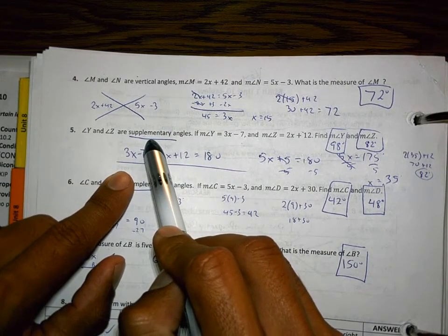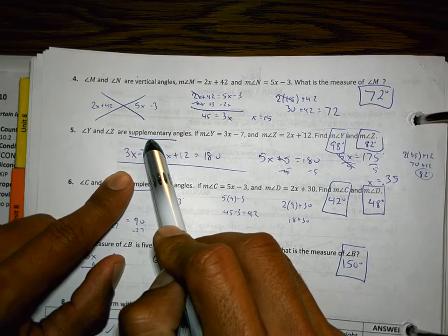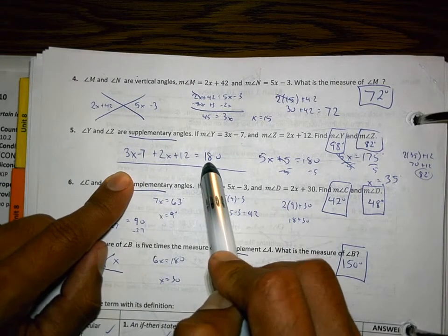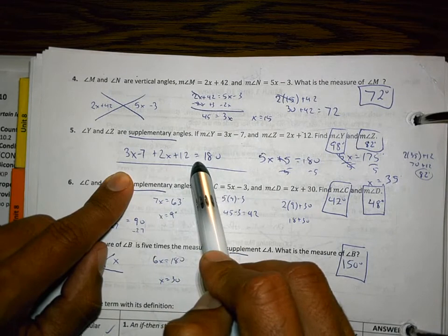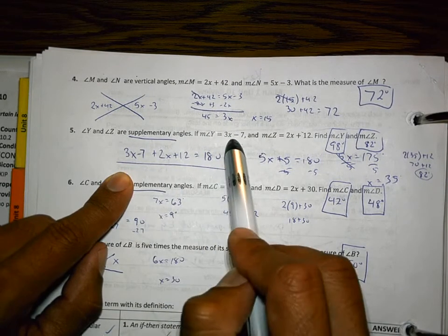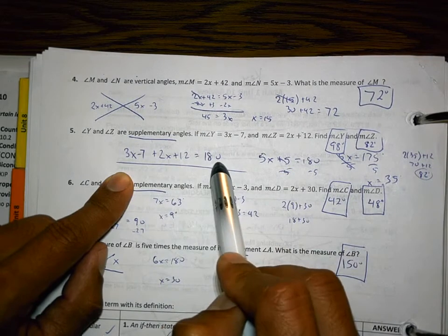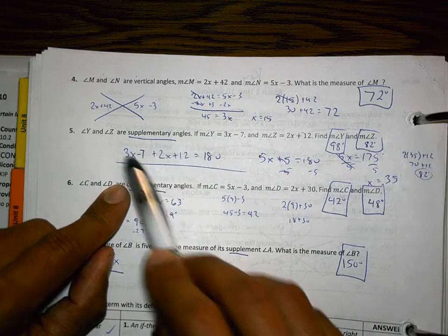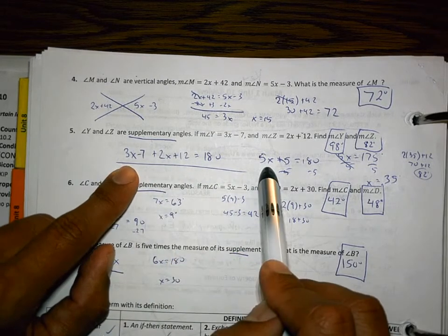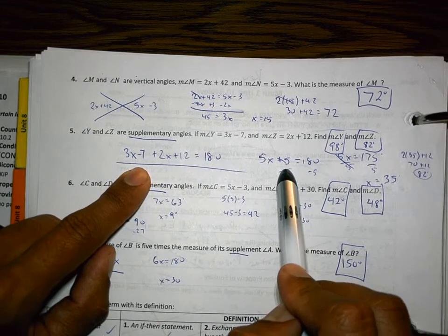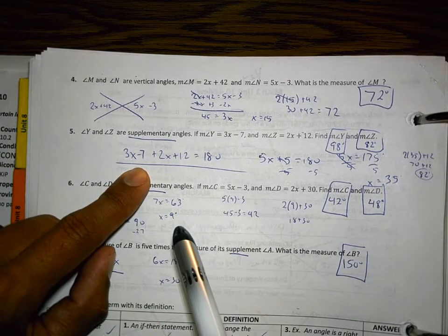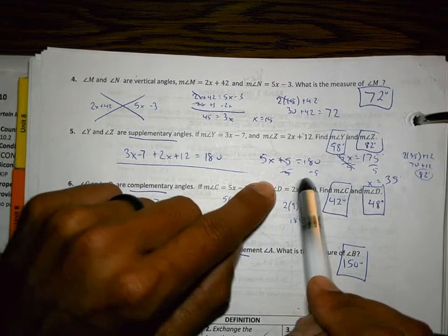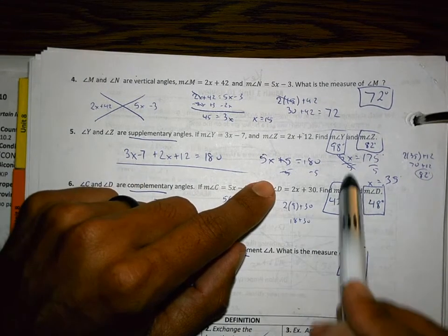Supplementary angles are different. You don't set them equal to each other. The word supplementary means adds to 180 degrees. So, if I'm adding to be 180 degrees, then I'm going to put 3x minus 7 plus the 2x plus 12 equals 180 because they're supplementary. And then I can find the x value by combining like terms. 3x plus 2x is 5x. Negative 7 plus 12 is positive 5. And then I subtract the 5. I get 175, and I divide, and I figure x is 35. That's not the angle's measurement.